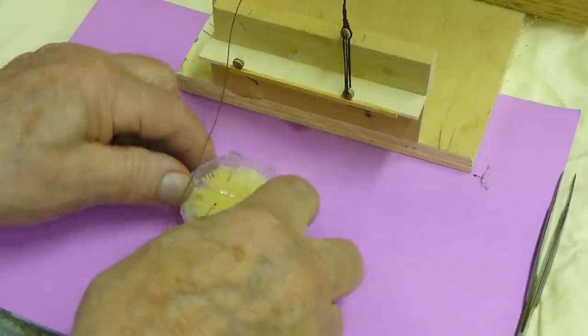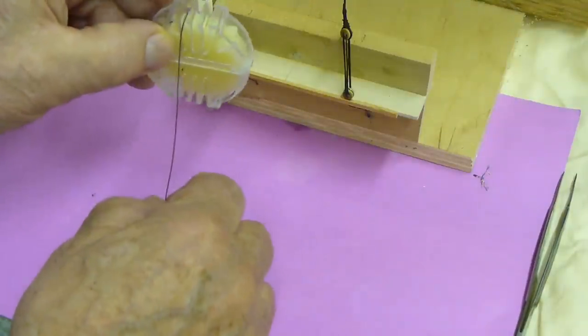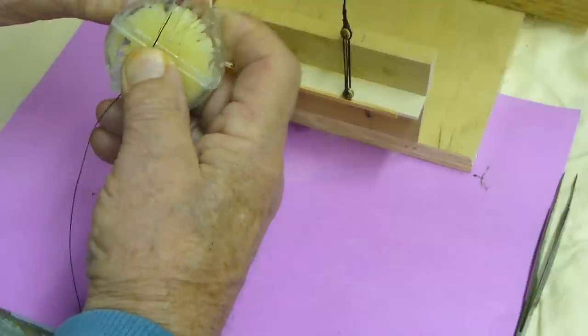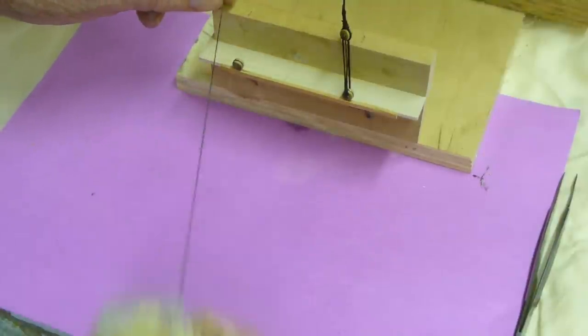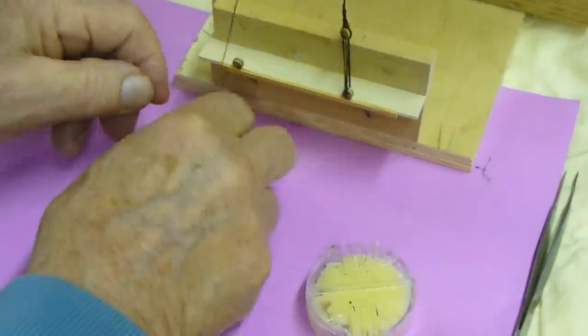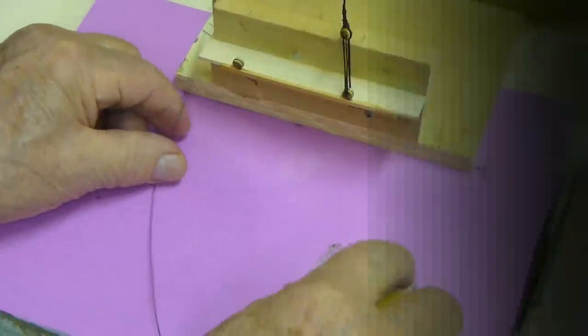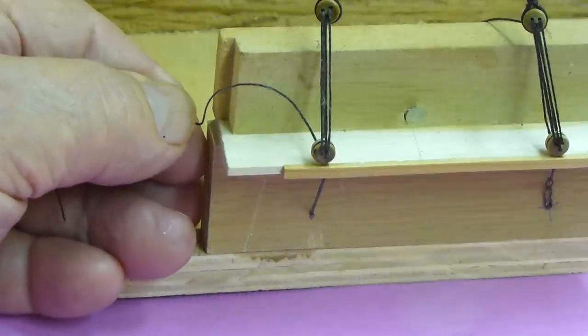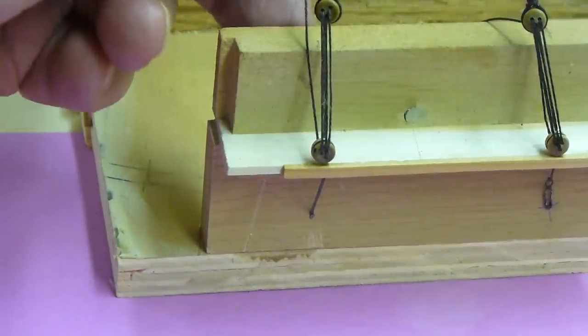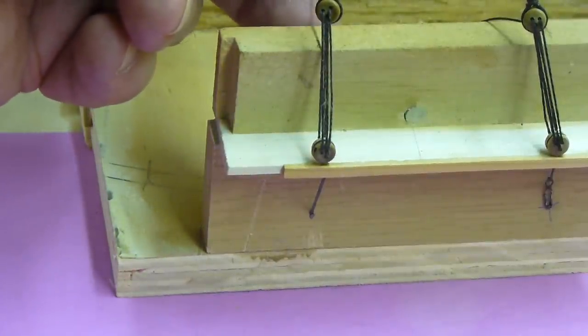For the second one I applied some beeswax to the lanyard. I noticed on the first one it wasn't going through the holes very smoothly. So here is some beeswax on the second lanyard and I started to weave back and forth until that one was done. Pretty straightforward but this last part is the fun part.